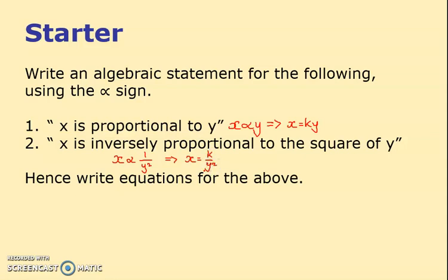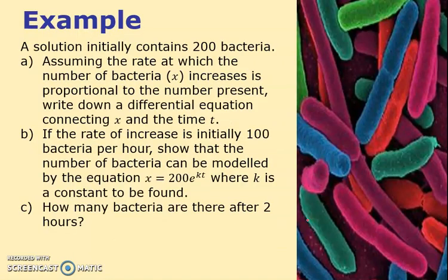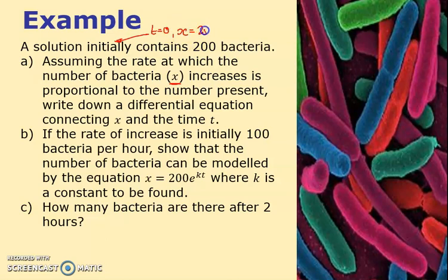Here's our first question. The solution initially contains 200 bacteria. As soon as it says 'initially', look out for t equals zero. The letter used for the number of bacteria is x, so I write x equals 200.